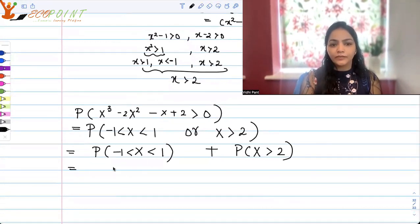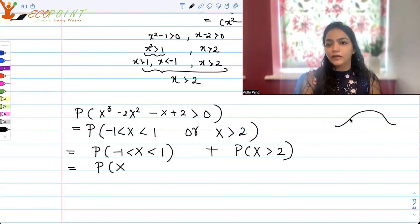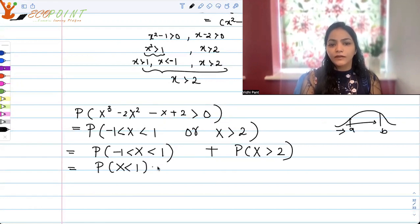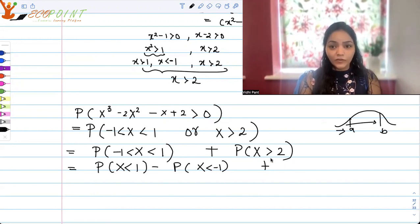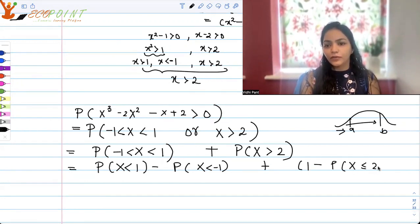So what will this turn out to be? This will be probability X is... always remember in continuous random variables, if you want to find out probability between a and b, it will be area till b minus area till a. So X is less than 1 minus probability X is less than -1 plus, now we want every expression in terms of CDF. So I can convert this to 1 minus probability X ≤ 2.